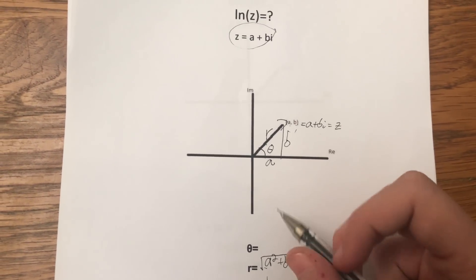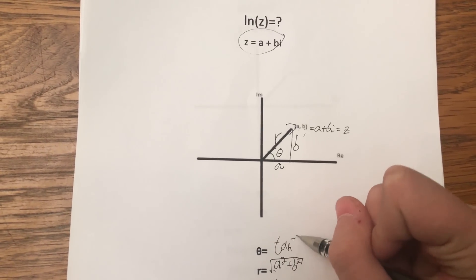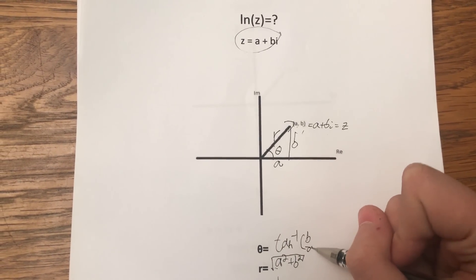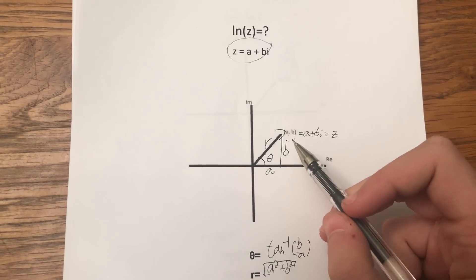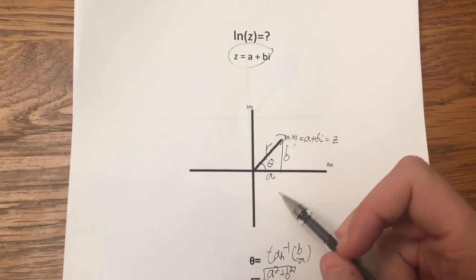Theta by trigonometry, of course, is the inverse tangent of b over a, because it's opposite over adjacent, so that's the tangent.